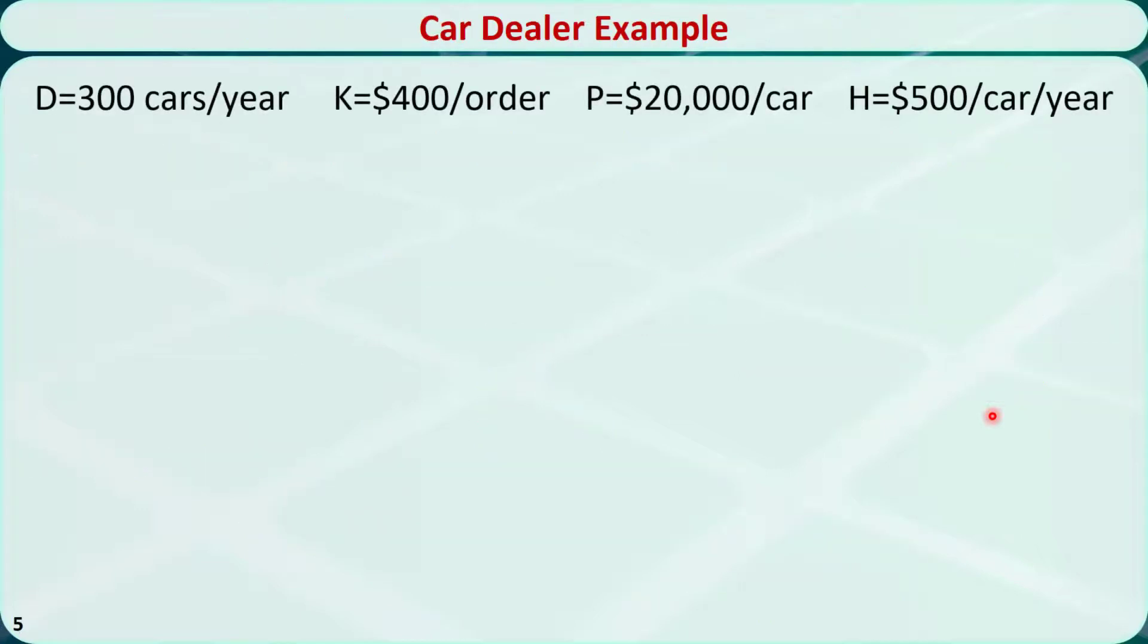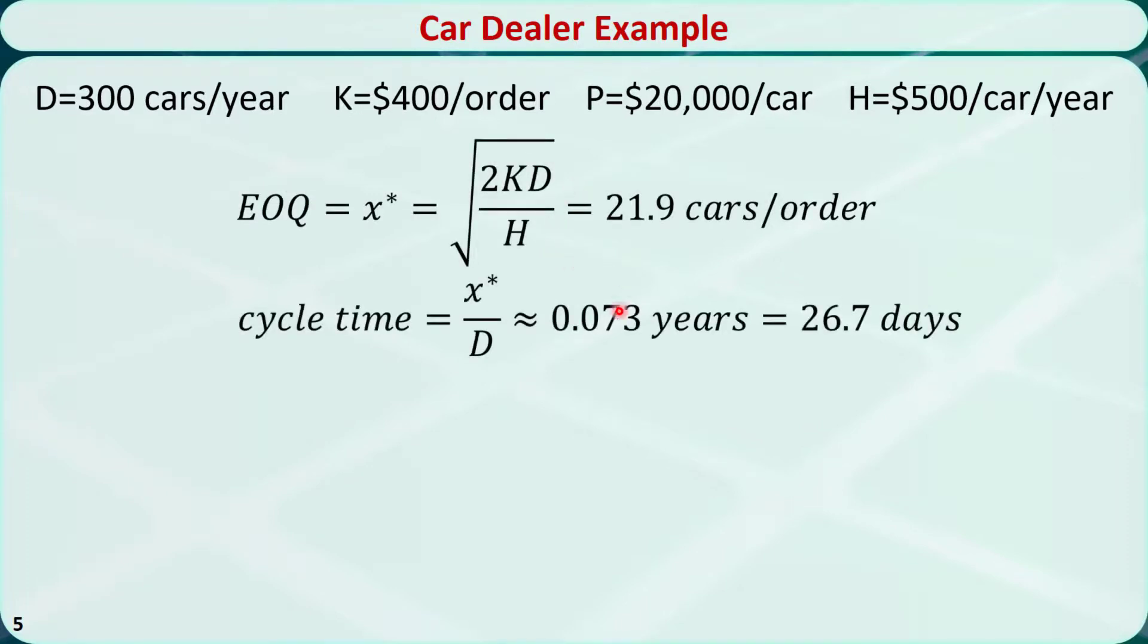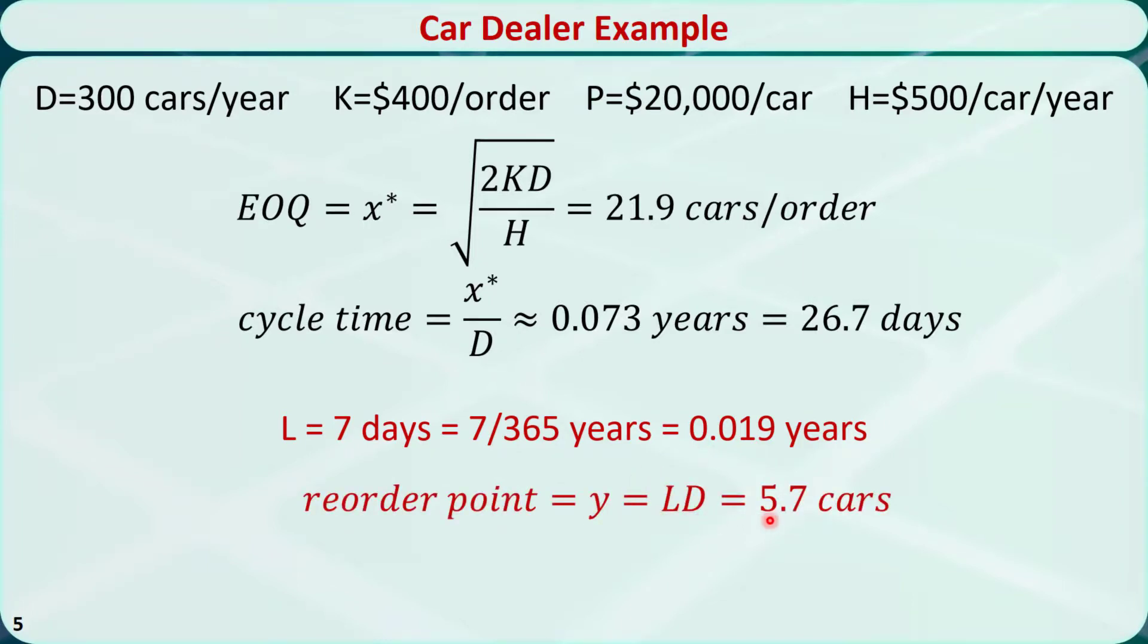Let's revisit the car dealer example that was introduced in a previous video. The EOQ is 21.9 cars per order. The cycle time is 0.073 years, or 26.7 days. If the lead time L is 1 week, 7 days, then the reorder point is L times D, is equal to 5.7. It means when there are 5.7 cars left in the inventory, we need to place the next order for 21.9 cars.